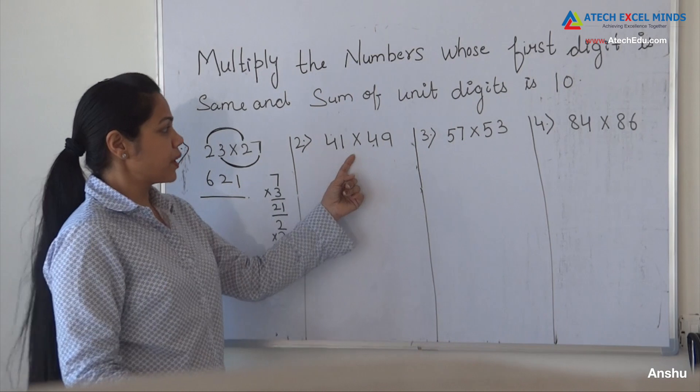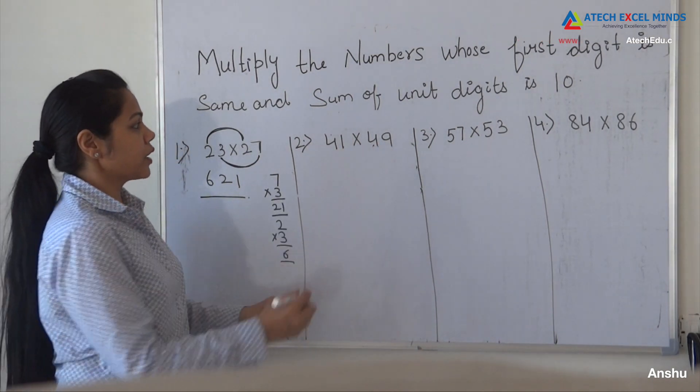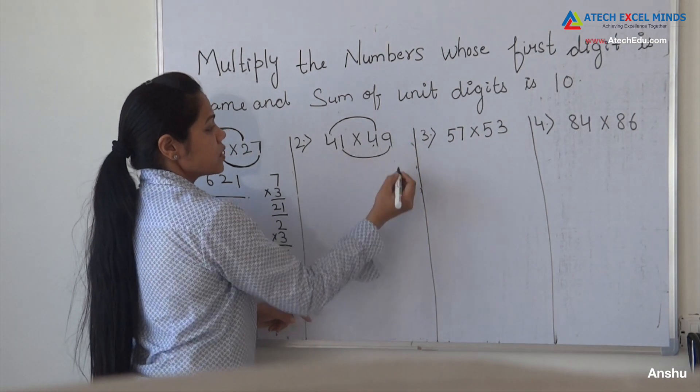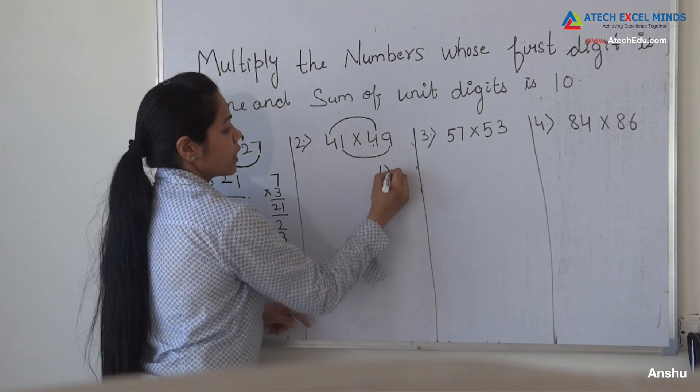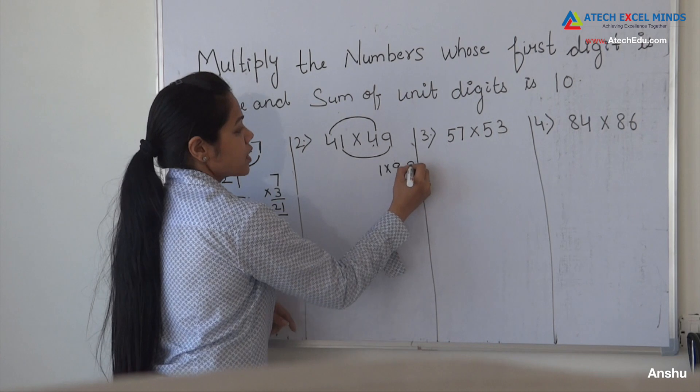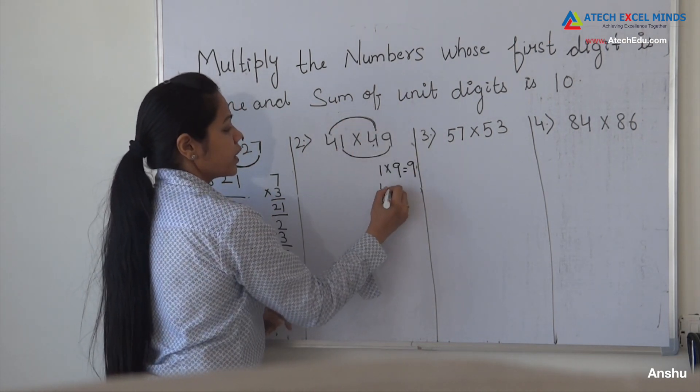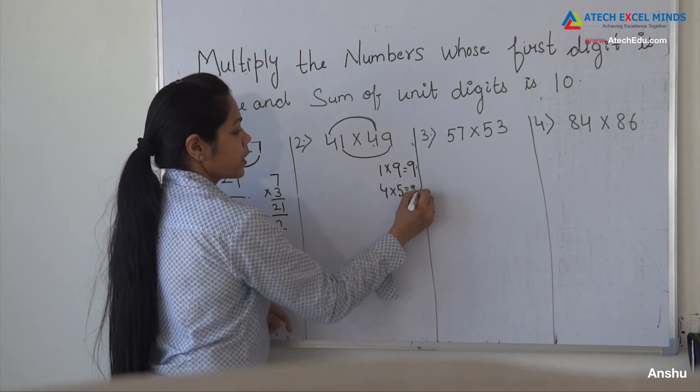Next example: 41 multiplied by 49. First digit is same and the sum of unit digits is 10. So multiply the unit digits: 1 times 9 is 9. And what is the first digit? It is 4, and the next number is 5, so 4 times 5 equals 20.